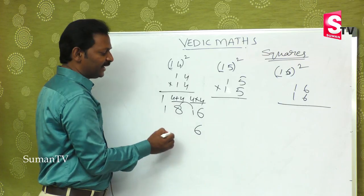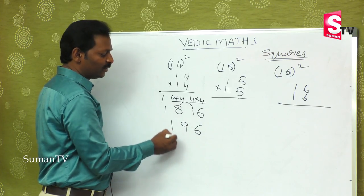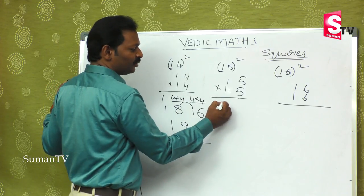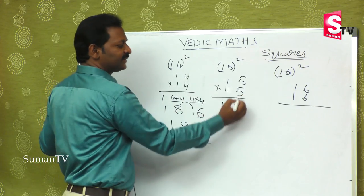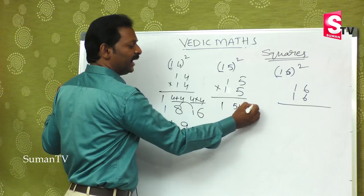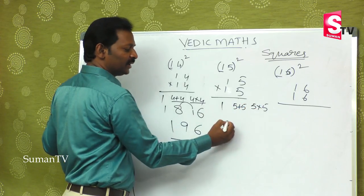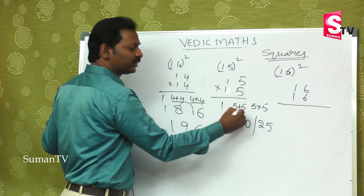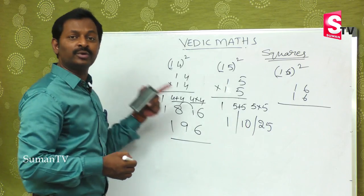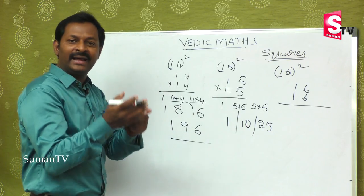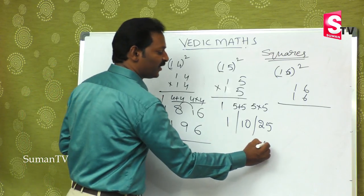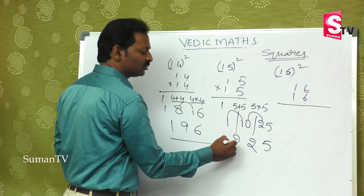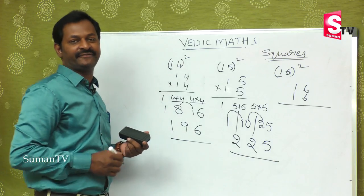For 14 square: the last part is 16, so we keep 6 and carry 1, adding it to 8, giving 9. So the answer is 196. For 15 square: 1, then 5 plus 5 is 10, then 5 into 5 is 25. Here two double digit numbers appear, so we balance twice — keep 5, carry 2 to 10 giving 12, keep 2, carry 1. The answer is 225.